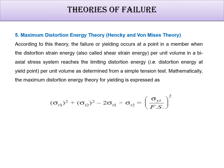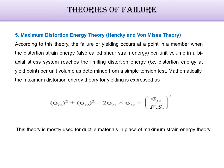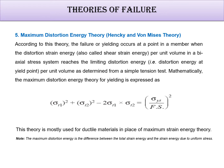Shear stress theory and distortion energy theory are mostly used in designing, along with normal stress theories — these three theories are very useful. This theory is used for ductile materials. It is defined as the difference between the total strain energy and the strain energy due to uniform stress.